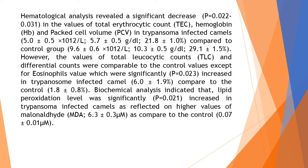Hematological analysis revealed a significant decrease (P = 0.022–0.031) in the values of total erythrocytic count (TEC), hemoglobin (HB), and packed cell volume (PCV) in Trypanosoma-infected camels: 5.0 ± 0.5 × 10¹² /L, 5.7 ± 0.5 g/dL, and 21.8 ± 1.0%, compared to the control group: 9.6 ± 0.6 × 10¹² /L, 10.3 ± 0.5 g/dL, and 29.1 ± 1.5%.